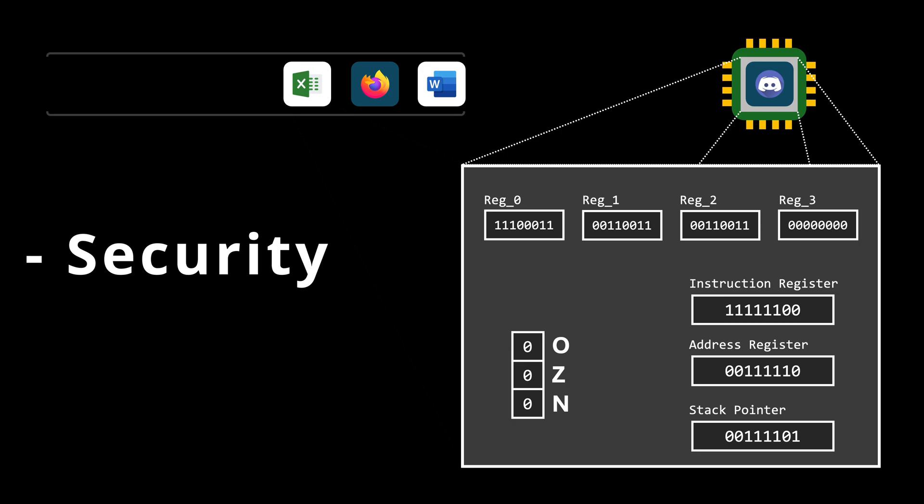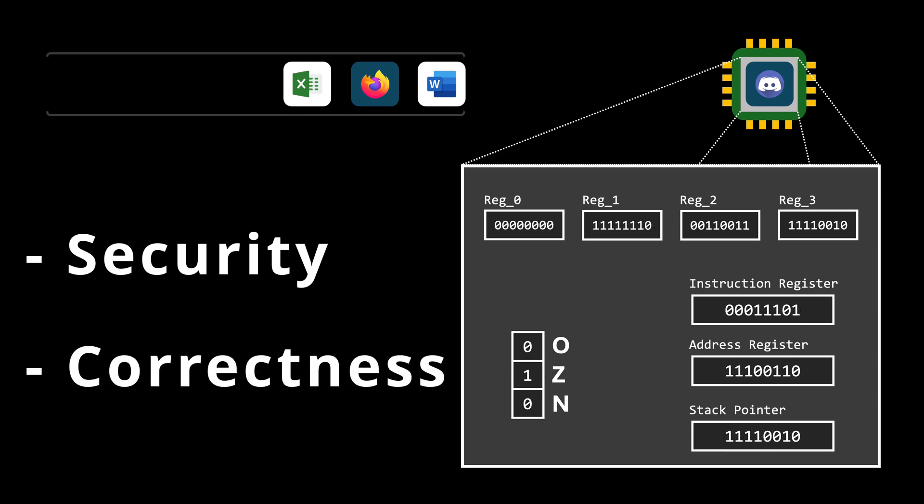Now let's assume that all processes are honest and won't use the information from a previous process. Even so, the current process still needs to manipulate the registers to carry out its own tasks. In doing so, it alters the CPU state of the previous process. So when the previous process regains CPU access later, the CPU state it had when it was interrupted would be lost. The second concern here is correctness of execution.